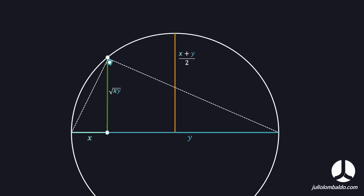We can see geometrically that the geometric mean is less than the arithmetic mean. Continuing, we share another point — the distance from this point to the center equals the radius. We form another triangle with angles alpha, 90 degrees, and beta. The corresponding angles in the two triangles give us beta and alpha again.